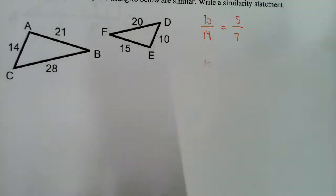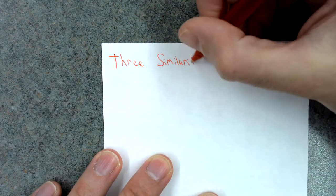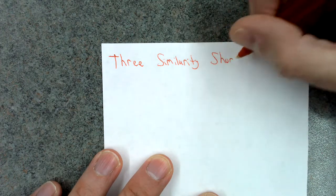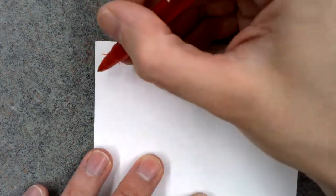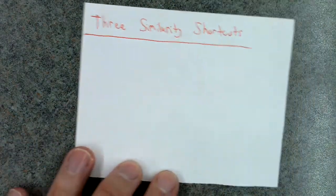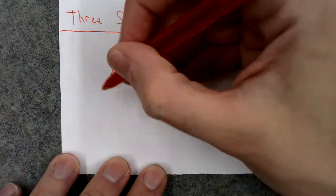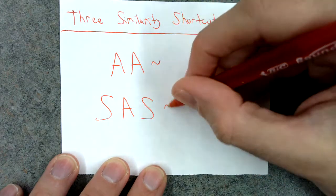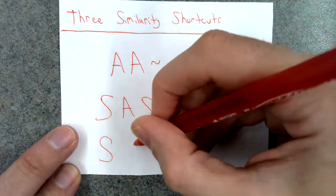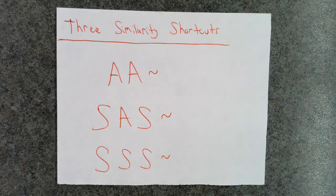Before we move on, let's recap. We have three similarity shortcuts: Angle-Angle Similarity, Side-Angle-Side Similarity, and Side-Side-Side Similarity. Those are the three similarity shortcuts you need to know.